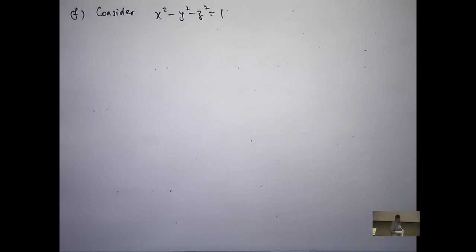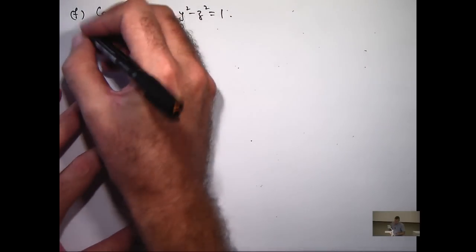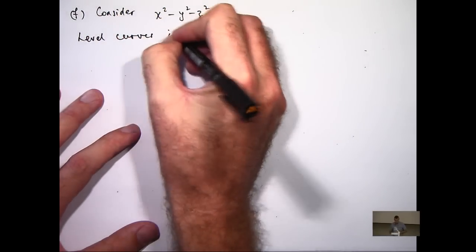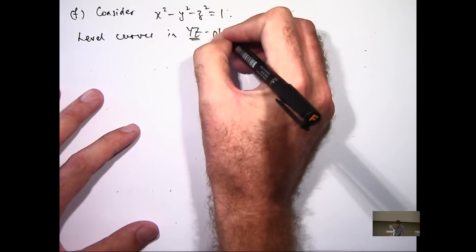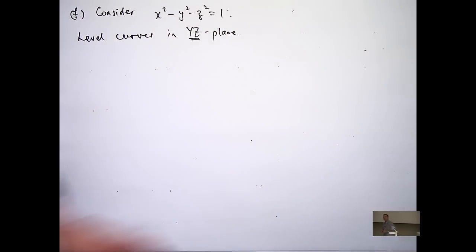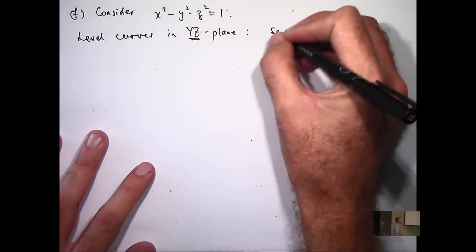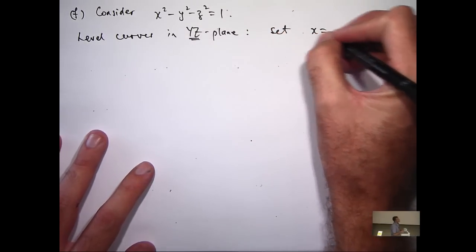I'm going to look at the level curves in the y-z plane and do it that way. How did I know that? Well, the first time I did it, I got all these hyperbolas and I couldn't quite connect them together. Let's look at some different perspectives. So the level curves in the y-z plane. So I'm going to set x equal to a constant.